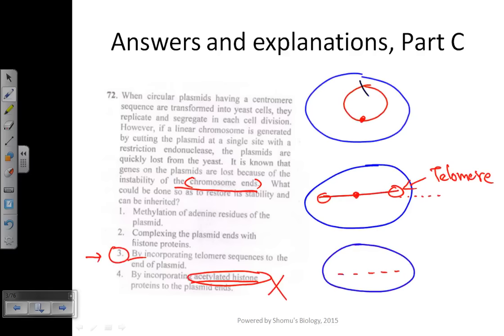Option 3 is the correct one. We will choose to add telomere sequences at the ends. This is true in practice because in certain plasmids like yeast artificial chromosomes (YACs), telomeres are added at the ends to prevent loss. So option 3 is the correct answer.